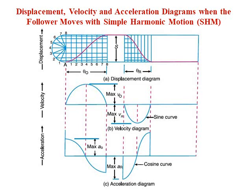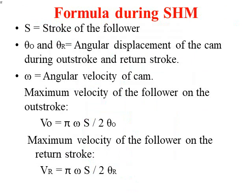On the other hand, looking at the acceleration diagram, the acceleration of the follower is maximum at the beginning and end of the stroke and diminishes to zero at mid-stroke — it is just the opposite of the velocity diagram. To find the values of velocity and acceleration, we use standard formulas.